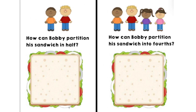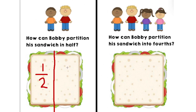Let me partition this sandwich in half vertically. I need to remember that I need to start in the middle whenever I'm partitioning it in half vertically. So I am going to start in the middle and begin cutting, going down, taking my time to try to make it as straight as possible. So Bobby will have one out of the two parts of the sandwich, which is one half, and then his friend will have one out of the two parts, which is also one half.